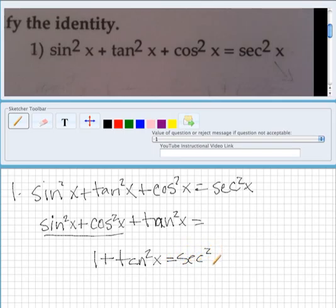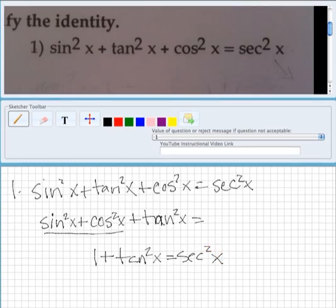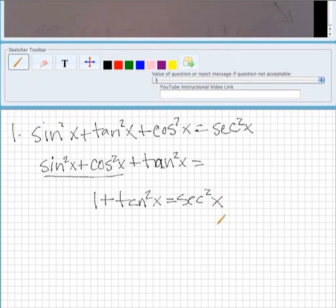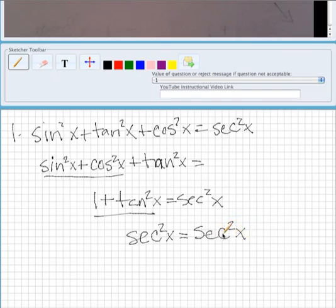And one of our other identities is that 1 plus tangent squared equals secant squared. So we can substitute this for secant squared. So what we get is secant squared x equals secant squared x.